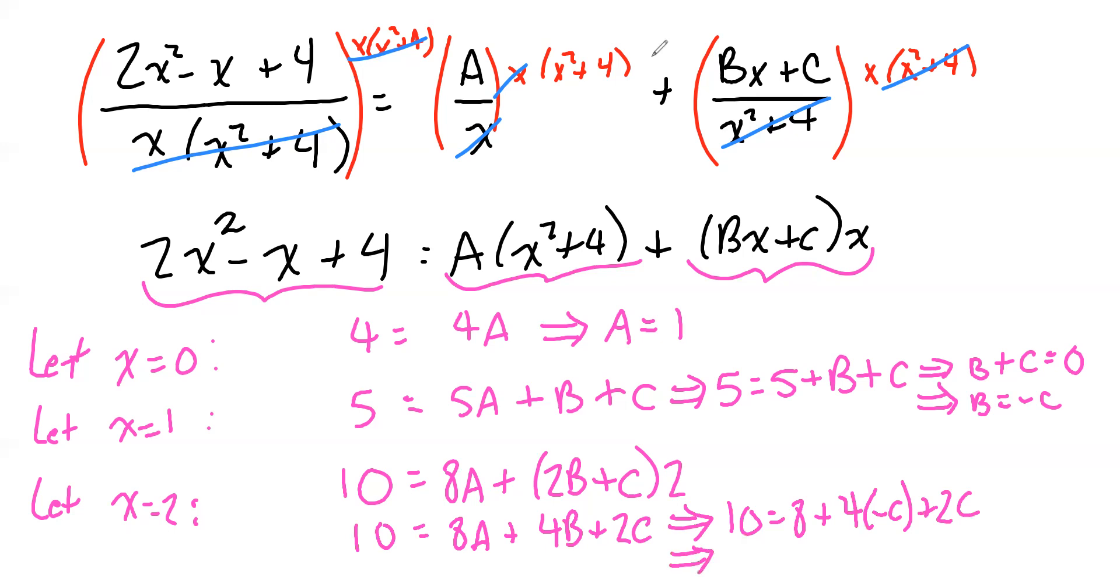Let's see what this implies. If we subtract 8 from both sides, we get 2. If we combine the c terms, negative 4c and positive 2c, negative 2c. And this implies that c is equal to negative 1.